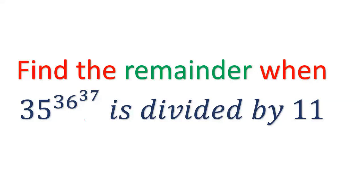The question asks: 35 to the power 36, to the power 37, divided by 11 — what would be the remainder?